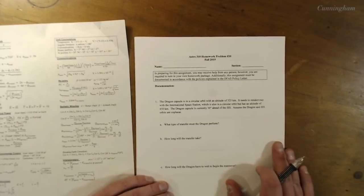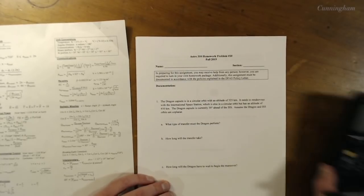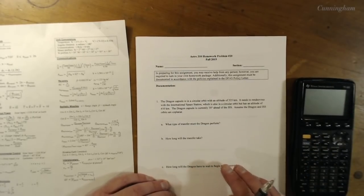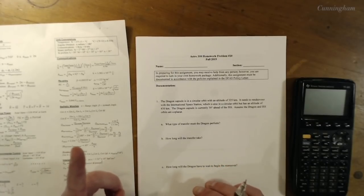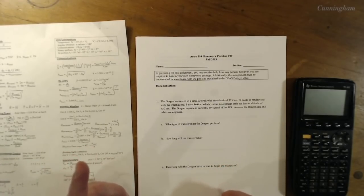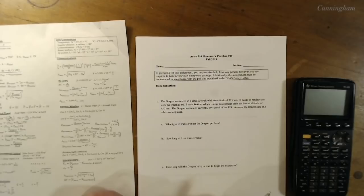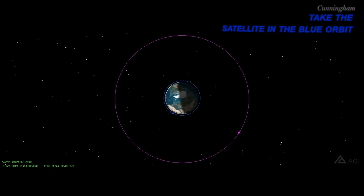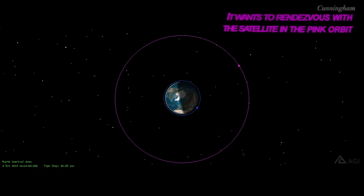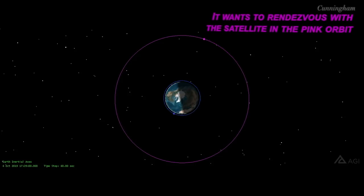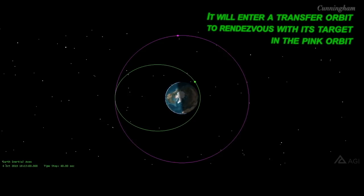Today we're talking about rendezvous. There are two kinds we focus on in Core Astro. The first is a coplanar rendezvous — two satellites start in two different-sized orbits in the same plane with the same inclination. If you see a problem where one satellite is in a small orbit and needs to rendezvous with something in a bigger orbit, that's coplanar. The second kind is co-orbital — both satellites start in the exact same orbit, not just the same plane.